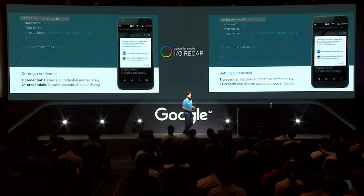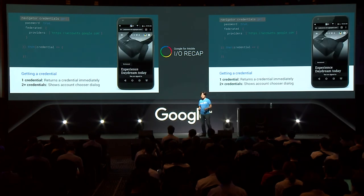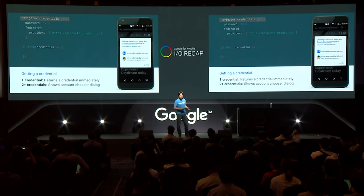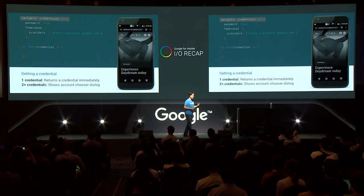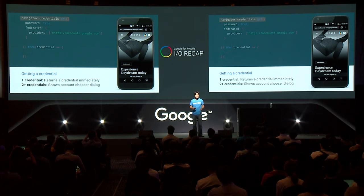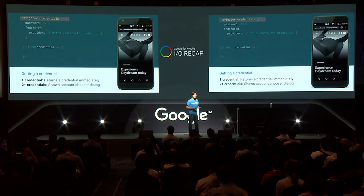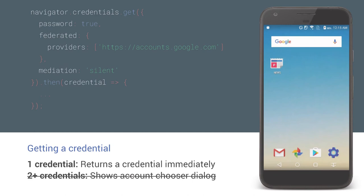Let me take a closer look at how it works. To obtain a credential, just call navigator.credentials.get(). If there's only one credential, it will return the credential immediately. Otherwise, if there are two or more, it shows an account chooser dialog, waits for the user to tap one, and then returns that credential. To sign in, continue with that credential information and post it to the server. By adding mediation: 'silent' to this call, you can use it for auto sign-in, because it doesn't show an account chooser and only returns a credential if there's exactly one stored.